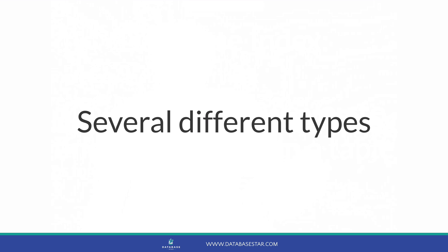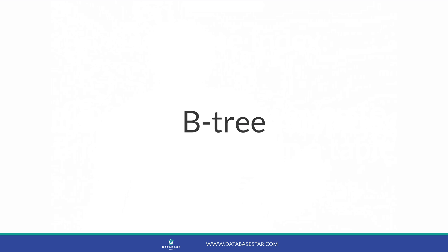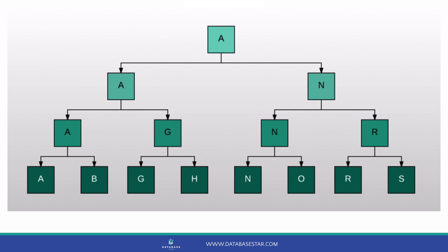There are several different types of indexes. I'll explain some of the more common ones in this video, and mention others if you wanted to look further into them. The first type of index is probably the most common — it's called a B-Tree index. It's also the default type of index, which means it's the one that's created if you don't add any modifiers to the statement. B-Tree stands for balanced tree. It's called a tree because of the way the index is used by the database — it works like a tree with branches and leaves.